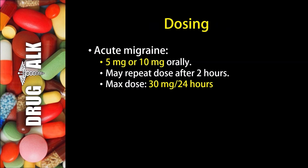Now, what about dosing with Rizatriptan? In the treatment of an acute migraine, a patient would typically use 5 or 10 milligrams orally. They would have the option to repeat this dose after 2 hours, and the maximum dose would be 30 milligrams per 24 hours.